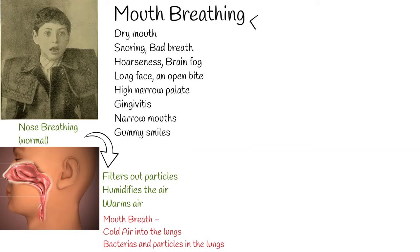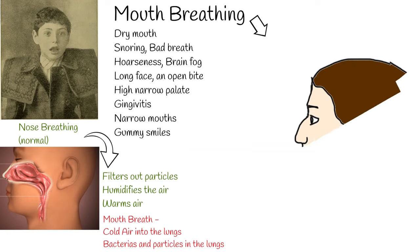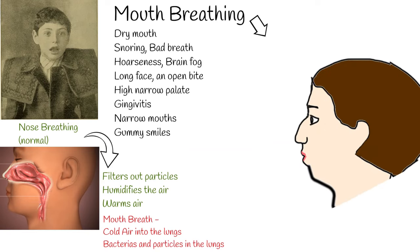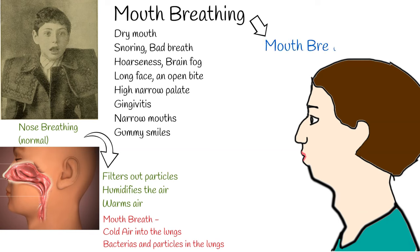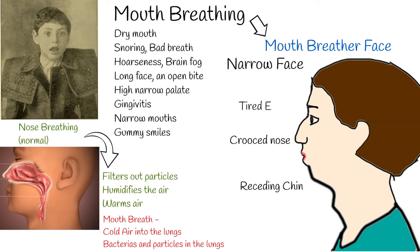Visually, especially in kids: a long face, an open bite, a high narrow palate, or gingivitis — inflammation of the gum. Also narrow faces, narrow mouths, high palatal vaults, dental malocclusion, gummy smiles, and many other unattractive facial features, such as skeletal class 2 or class 3 facial profiles.